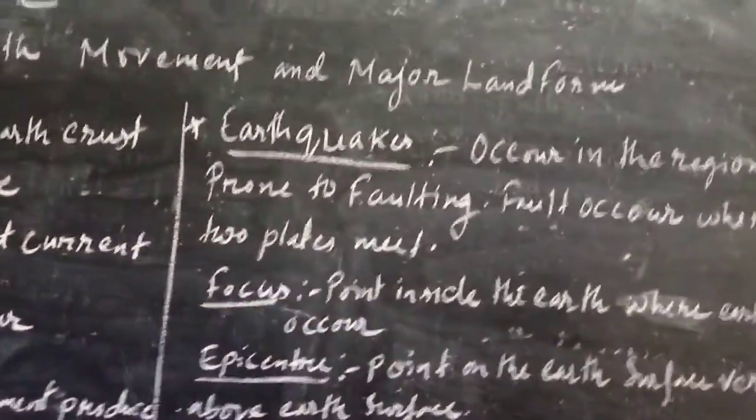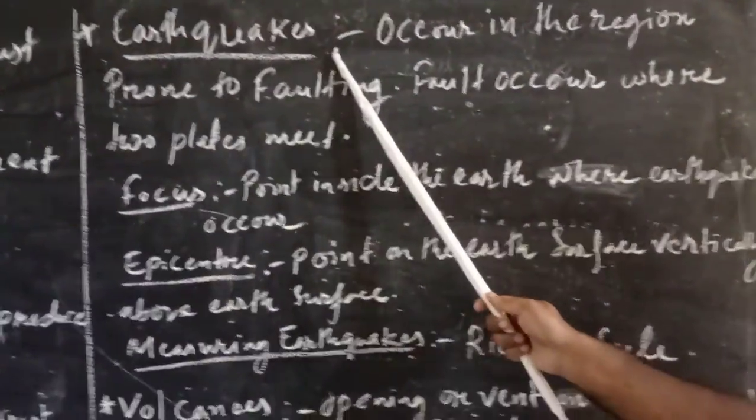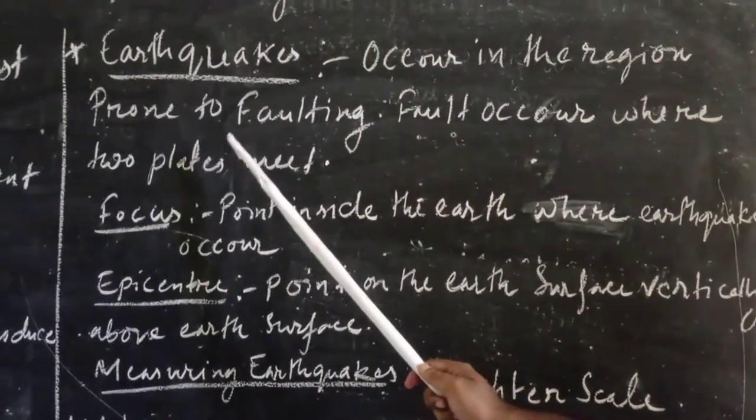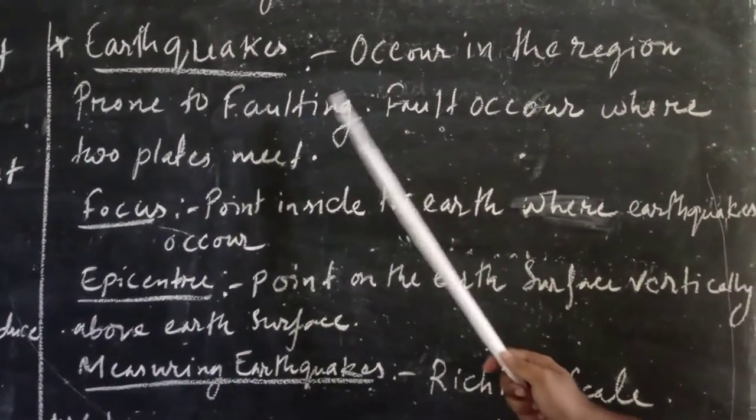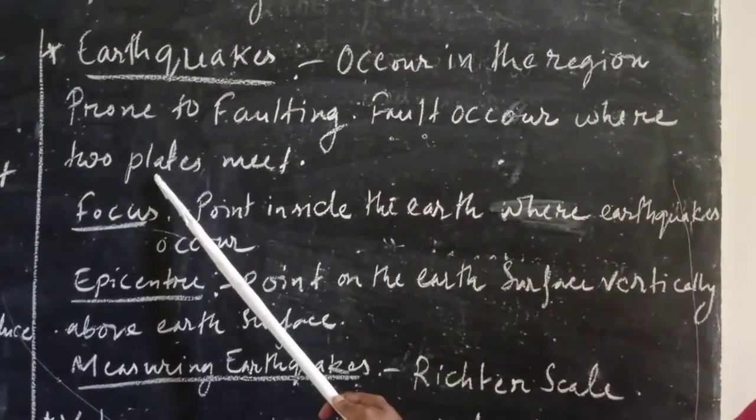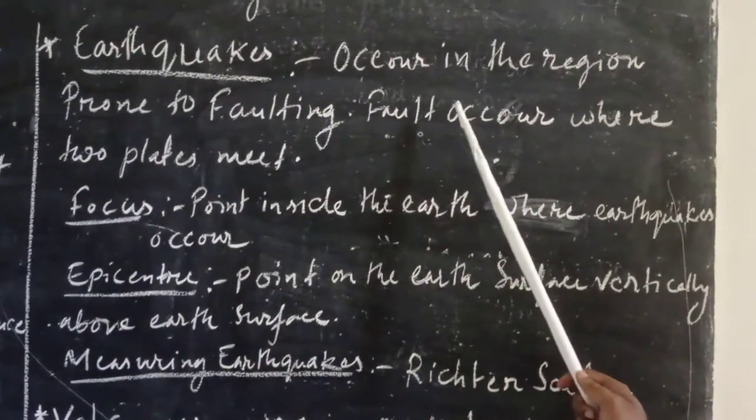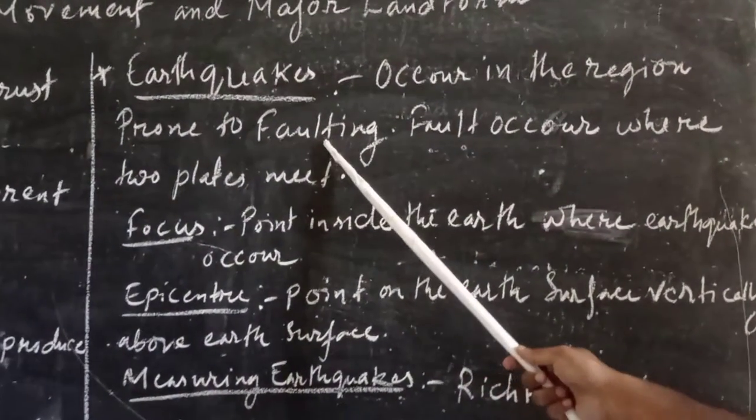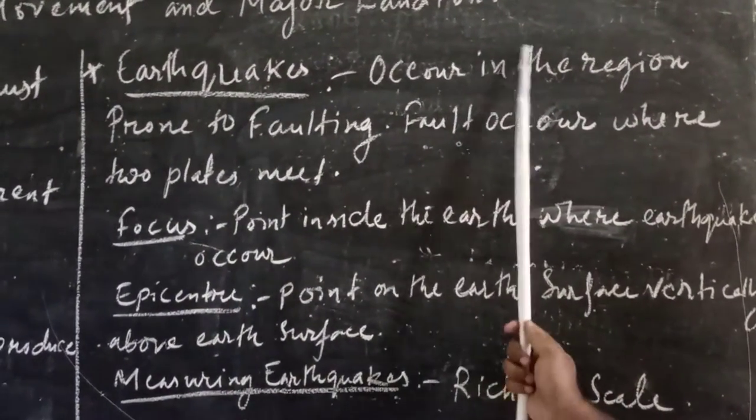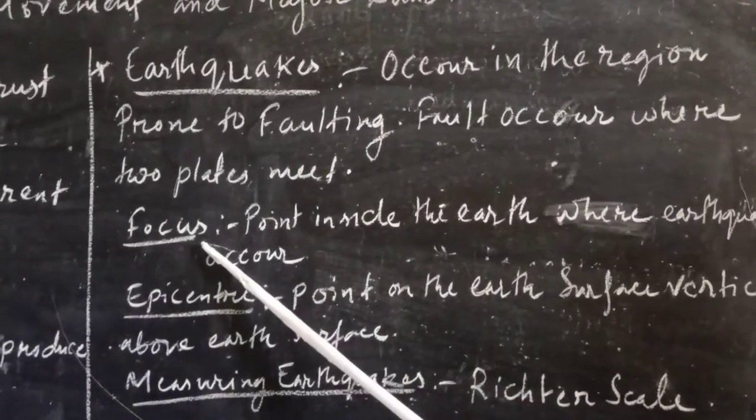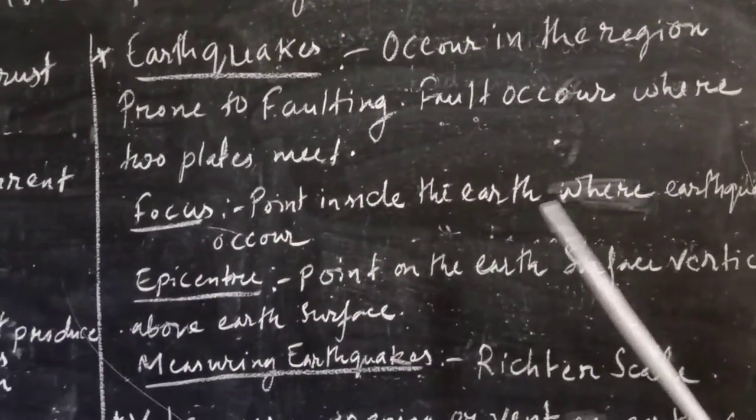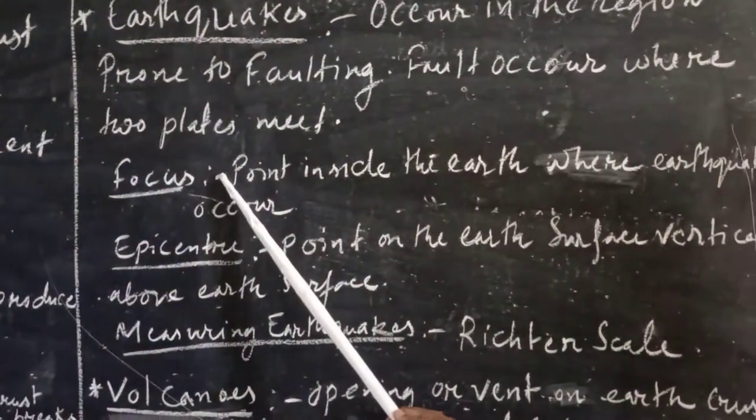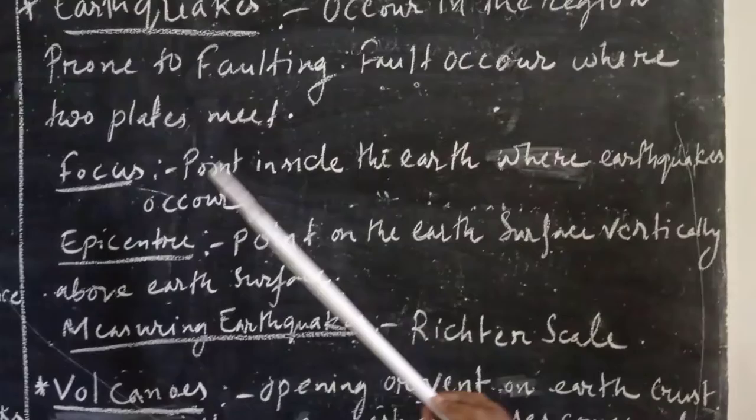Let us go to next topic, that is earthquake. Earthquake occurs in the region found to faulting. What is faulting now? Fault occurs when two plates meet. When two plates inside the Earth's interior meet, then earthquake occurs.